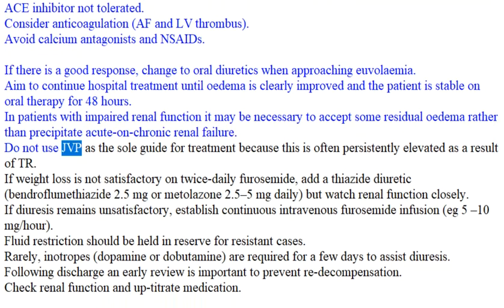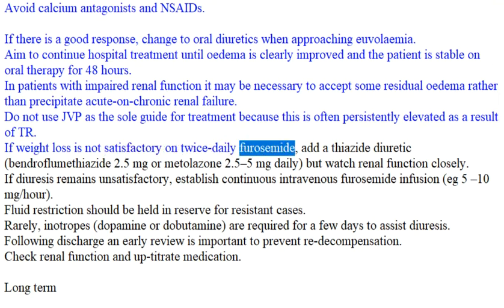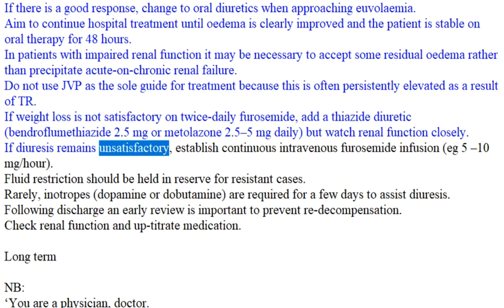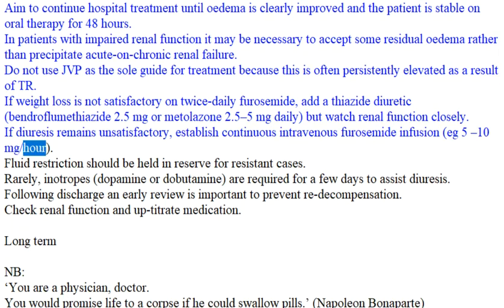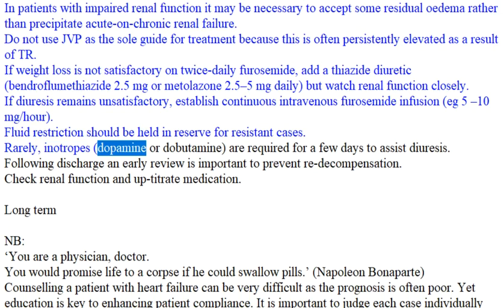Do not use JVP as the sole guide for treatment, as it is often persistently elevated due to TR. If weight loss is not satisfactory on twice-daily furosemide, add a thiazide diuretic — bendroflumethiazide 2.5 mg or metolazone 2.5–5 mg daily, but watch renal function closely. If diuresis remains unsatisfactory, establish continuous intravenous furosemide infusion, e.g., 5–10 mg/hour. Fluid restriction should be held in reserve for resistant cases. Rarely, inotropes (dopamine or dobutamine) are required for a few days to assist diuresis.